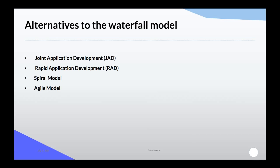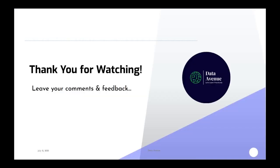So what are the better alternatives available? Today we have JAD, RAD, Spiral, and Agile. JAD — Joint Application Development — involves not just the business analyst during the requirements phase but also representatives from development, testing leads, SMEs, and users, all getting together to discuss requirements. The most famous model in today's world is Agile. The next video will cover JAD, Agile, and how requirements are captured and derived in those models.